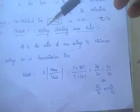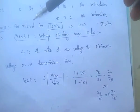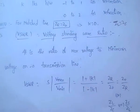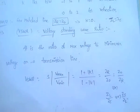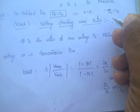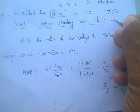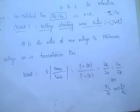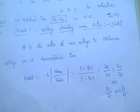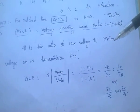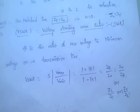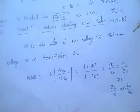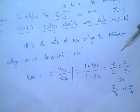That is nothing but VSWR — voltage standing wave ratio. It is also called standing wave ratio, SWR. It is the ratio of maximum voltage to the minimum voltage on a transmission line.